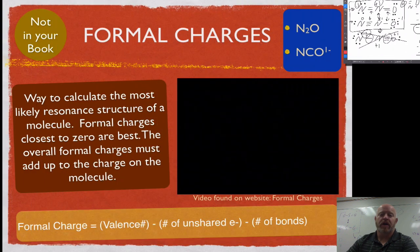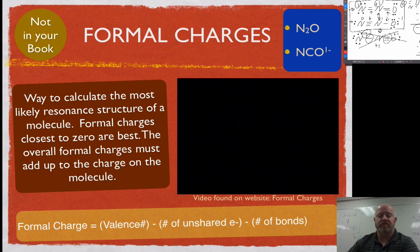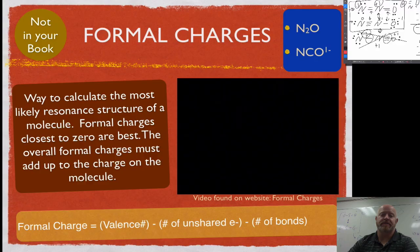So that's how we do it. There's another example up on the screen here, NCO minus 1. You can work that one out with its different resonance structures. And again, when you do that one, keep in mind that the formal charge should add up to a negative one as you practice that one. And then we'll also have some other practice in class. Thank you.